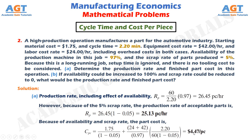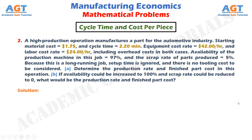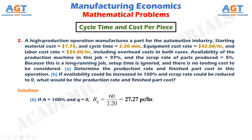Now let's look at Part B: if availability could be increased to 100% and scrap rate could be reduced to 0, what would be the production rate and finished part cost? With availability A equals 100% (or 1) and scrap rate equals 0, the equation for production rate becomes Rp equals 60 divided by Tp. Putting in the cycle time value, we get a production rate of 27.27 pieces per hour.